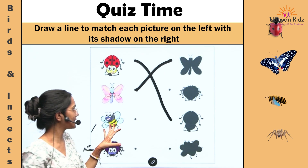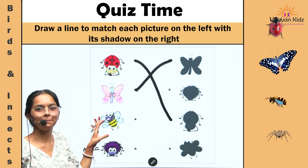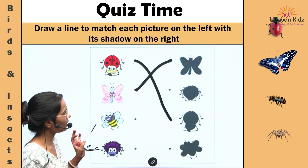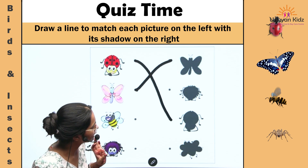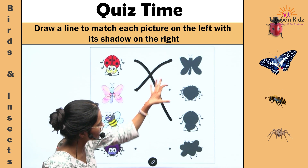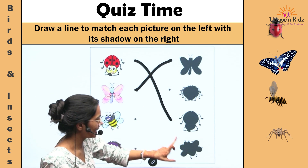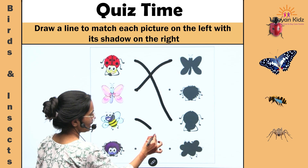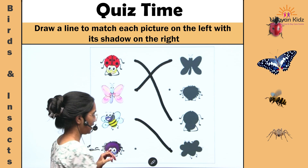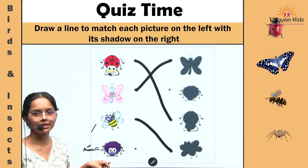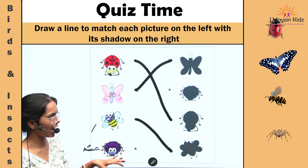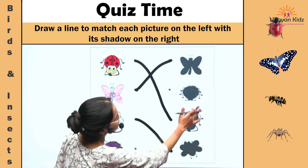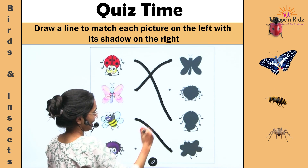This is bee. Now find the bee. Yes, this is bee. This is spider. Let's find the spider. There, yes.